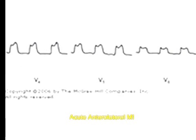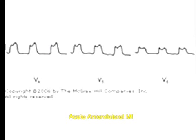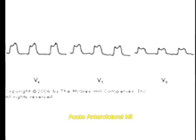You can see here acute anterior MI, characterized by ST segment elevation especially in V2 and V3. And if you see ST elevation in lateral leads such as V4, V5, V6, it is acute anterolateral infarction. So in acute anterolateral infarction you will see ST segment elevation in lateral leads V4, V5, V6.